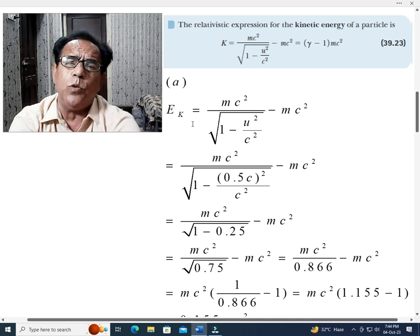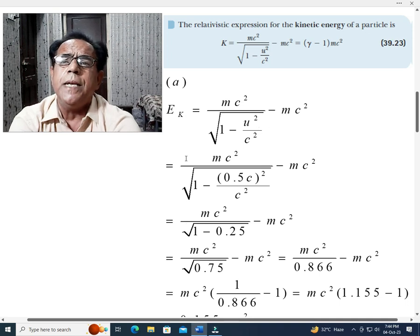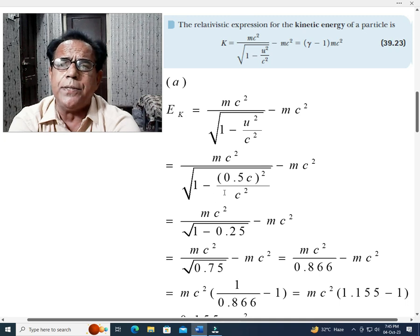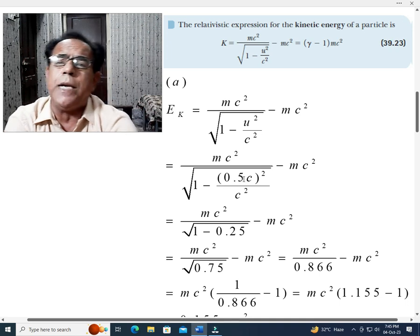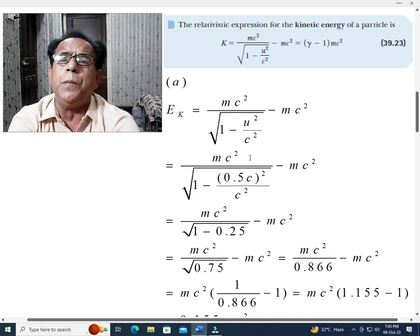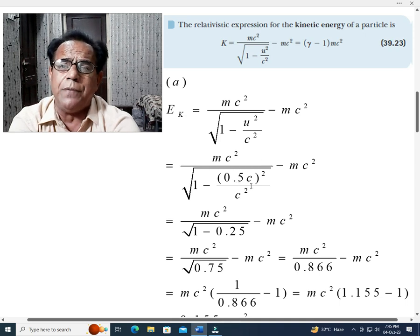So, as per formula, we know that kinetic energy is equal to mc squared over square root of 1 minus u squared over c squared minus mc squared. This alternatively becomes equal to mc squared over square root of 1 minus u. In place of u, we will use 0.5c because in part a this value u is given as 0.5c over c squared minus mc squared.